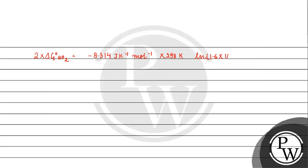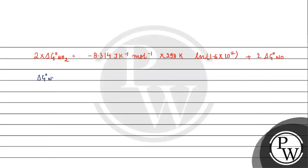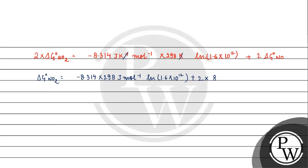Plus 2 into ΔG° of NO. Solving for ΔG° of NO₂, it will be minus 8.314 × 298 J per mol × ln(1.6 × 10 raised to the power 12), plus 2 into ΔG°(NO). ΔG°(NO) is given to us as 86.6 kJ per mol, which we convert to Joules per mol.